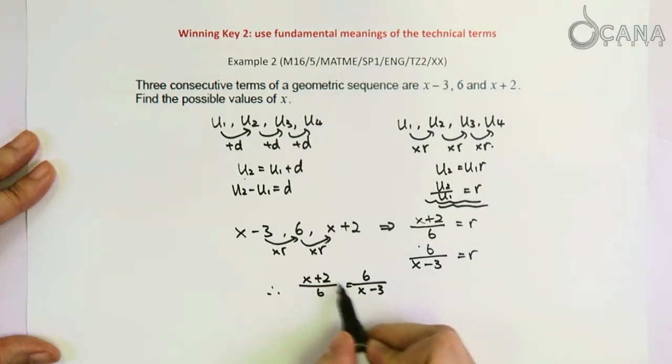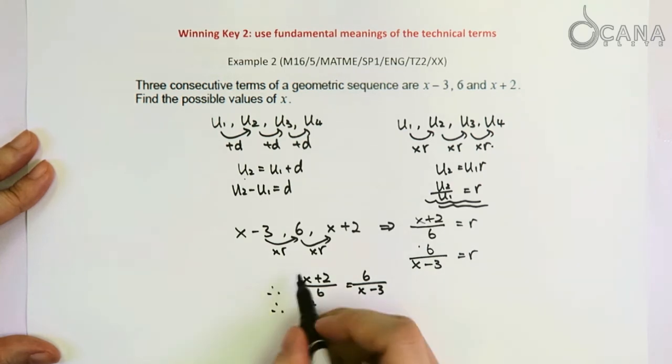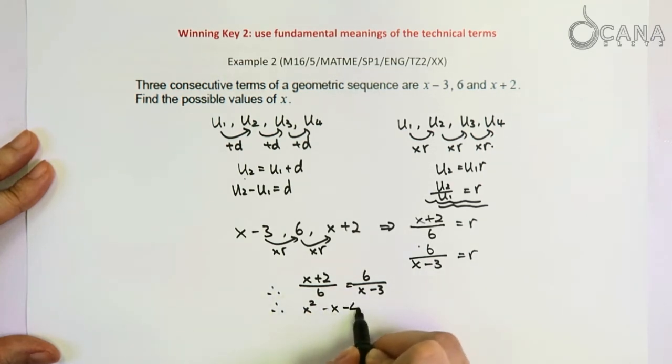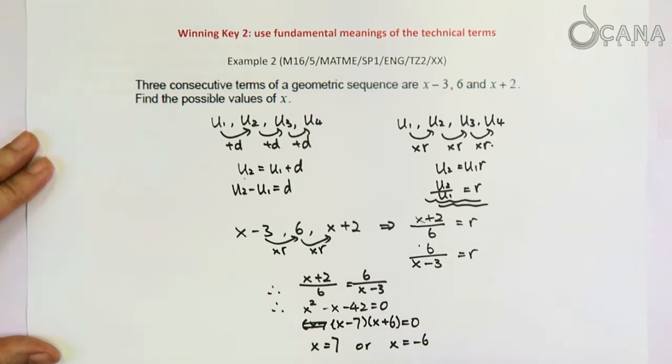With just very simple cross multiplication, we can get a quadratic equation that looks like this. And we factorize to solve that x equals to 7 or x equals to negative 6.